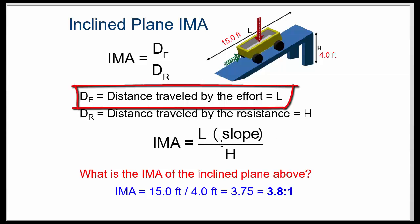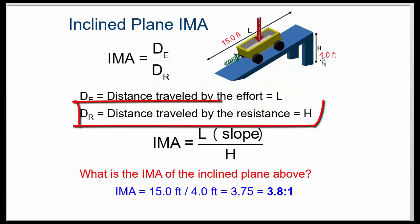the length of the slope. In this case, it's 15 divided by the height, which is 4 feet. So it's 15 divided by 4, and you end up with 3.75.